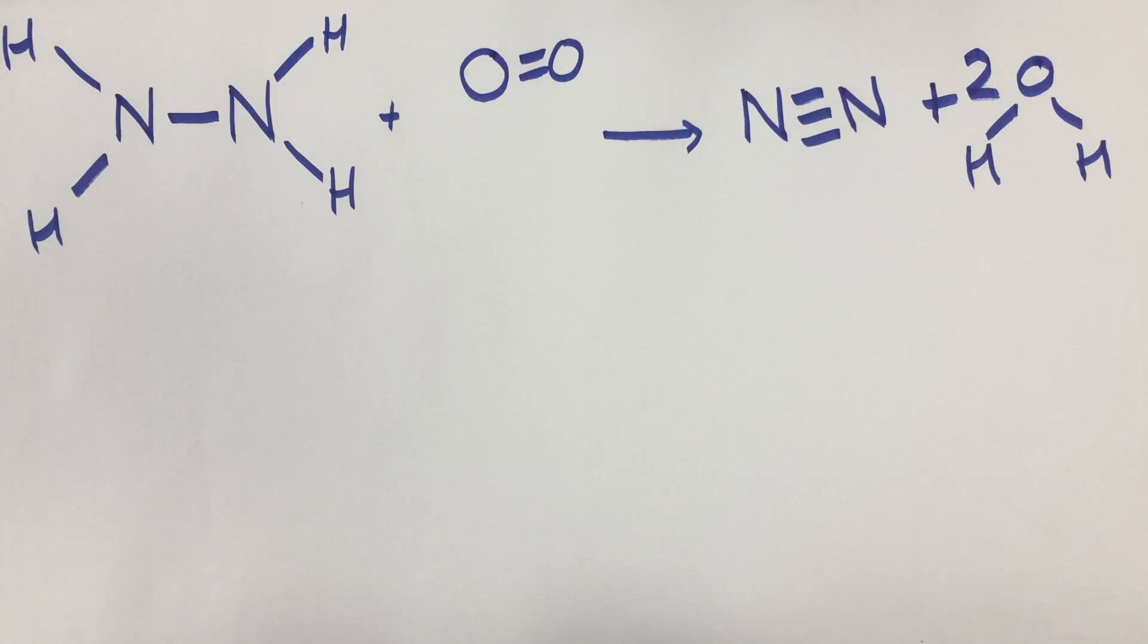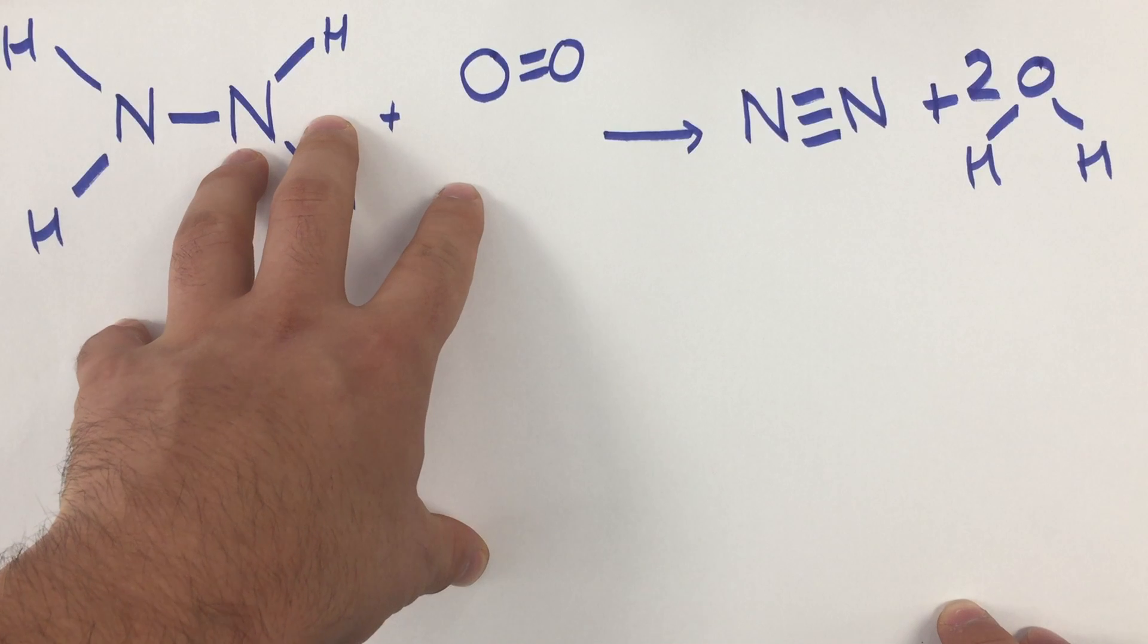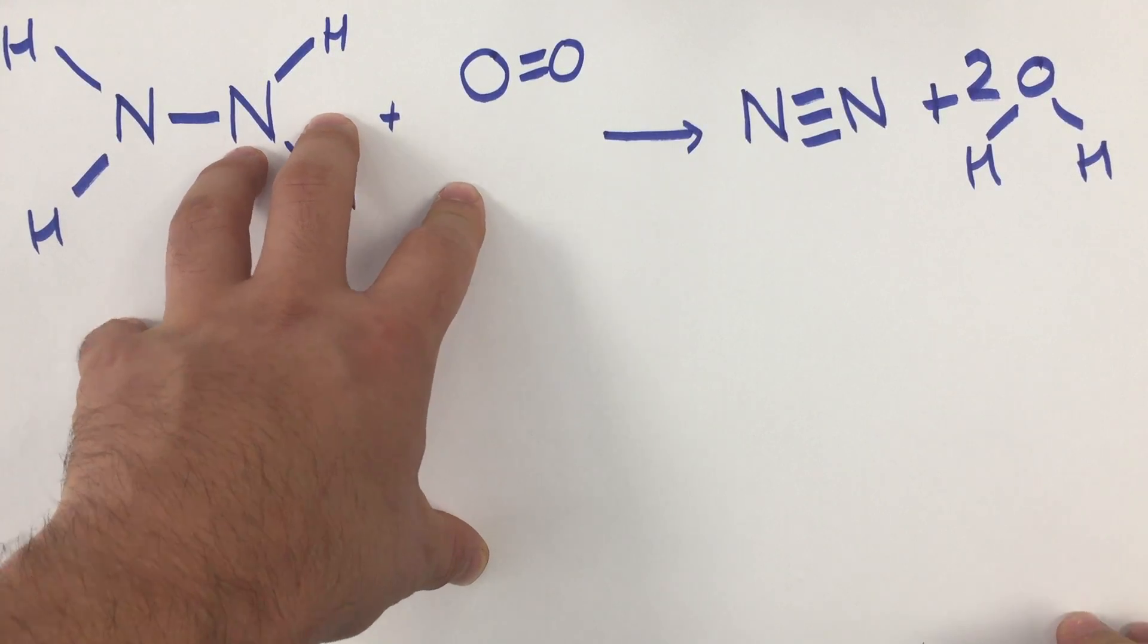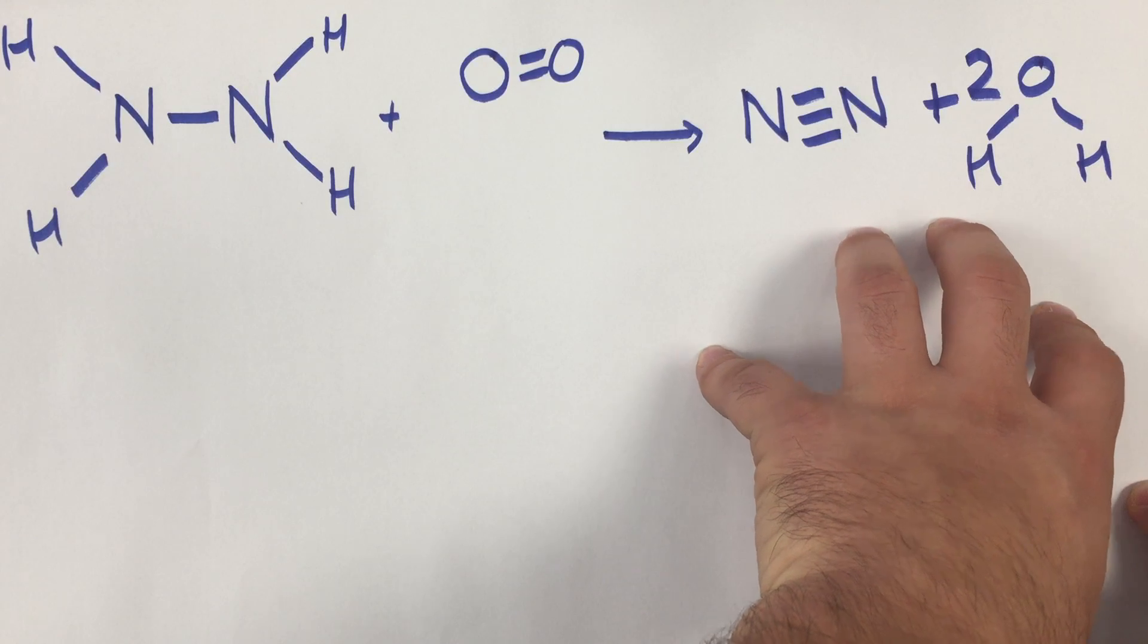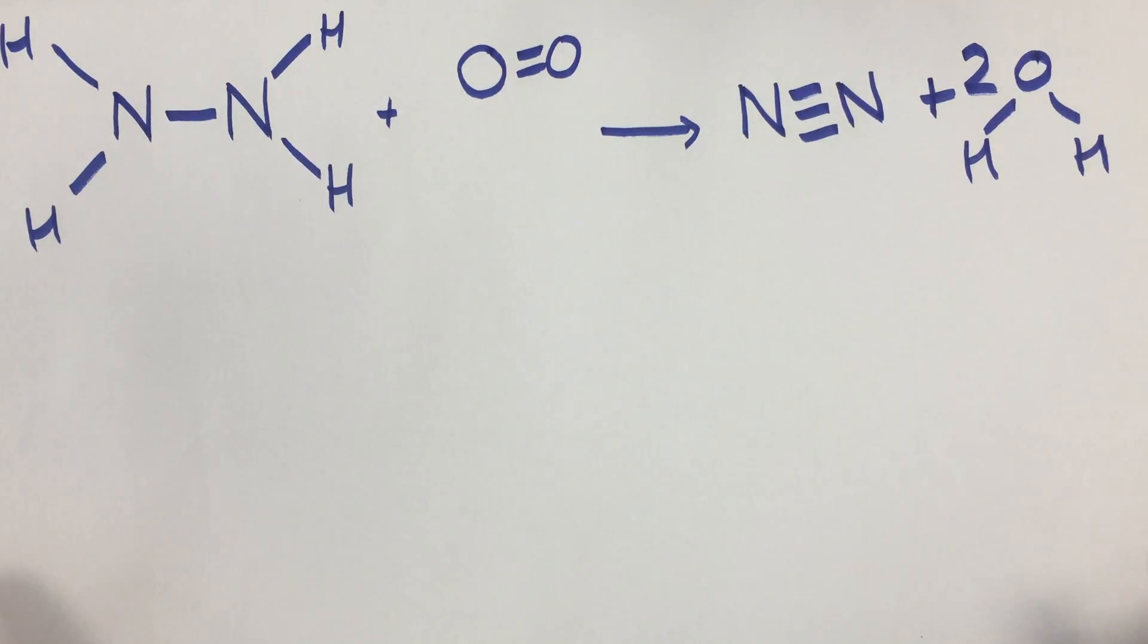What you need to do is work out how much energy is required to break the bonds on the left hand side, which is the endothermic phase, and how much energy will be released when you make bonds on the right hand side, and then work out the overall difference.